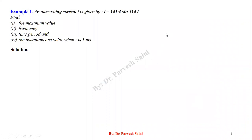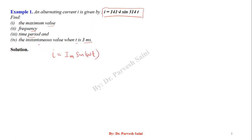Let us take up our first numerical. An alternating signal is given as i = 141.4 sin(314t). We have to find the maximum value of this signal, the frequency, the time period, and the instantaneous value when time is 3 milliseconds. Comparing with the standard form i = Im sin(ωt), we get Im = 141.4 ampere.